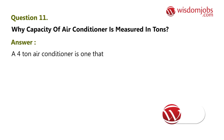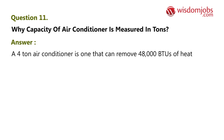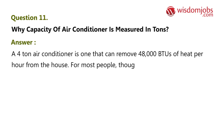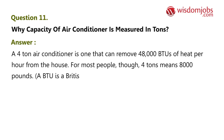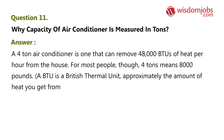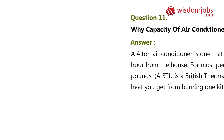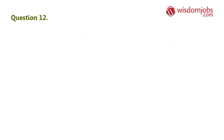Question 11: Why is the capacity of an air conditioner measured in tons? Answer: A 4-ton air conditioner is one that can remove 48,000 BTUs of heat per hour from the house. For most people, though, four tons means eight thousand pounds. A BTU is a British thermal unit — approximately the amount of heat you get from burning one kitchen match all the way down.